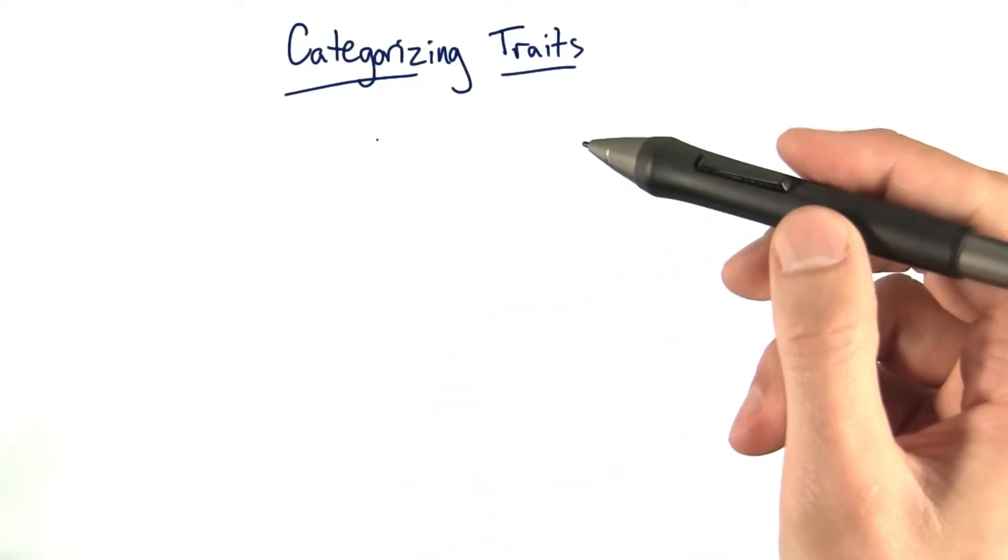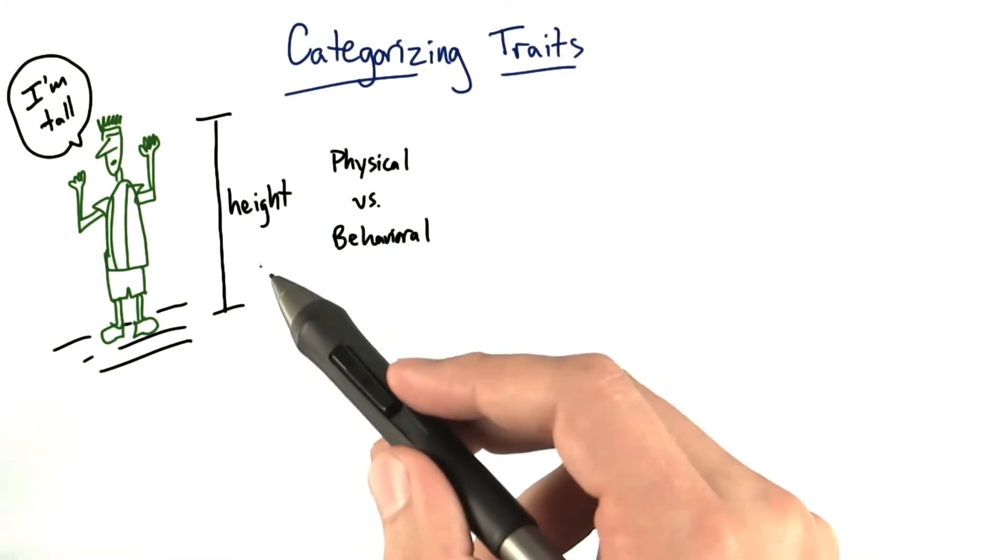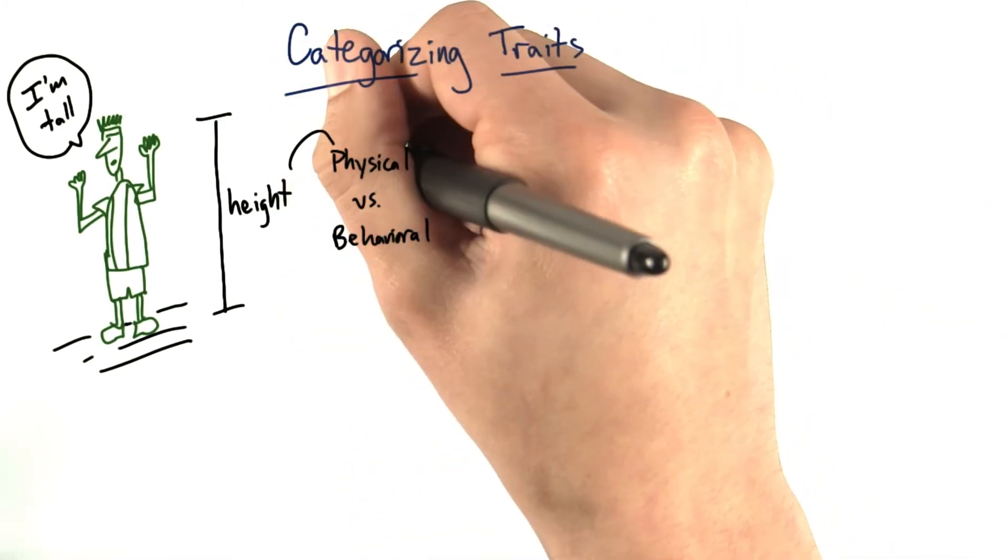Not every trait fits neatly into one category or another. For example, height is something we can easily identify as being physical.